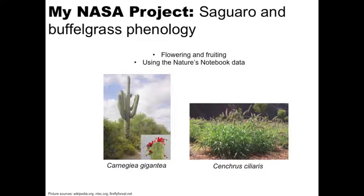I spent the first half of my internship conducting a phenology model literature review and characterizing the Arizona Nature's Notebook data, and the second half studying the iconic saguaro cactus, shown on the left, and the invasive buffelgrass shown on the right. I chose these plants because they have a wealth of observations in the NPN database and because of their local significance. Saguaros are a keystone species in the Sonoran Desert and hold cultural significance for Native Americans, whereas buffelgrass have been shown to be detrimental to the local environment, where they compete with native plants and increase the risk of wildfires.